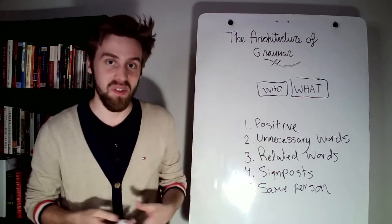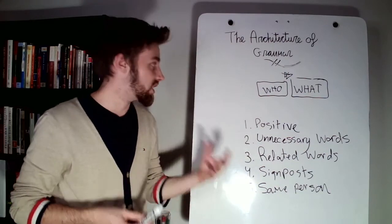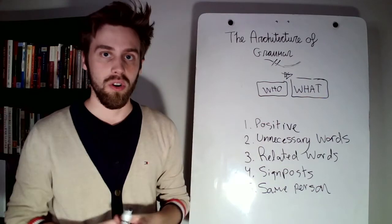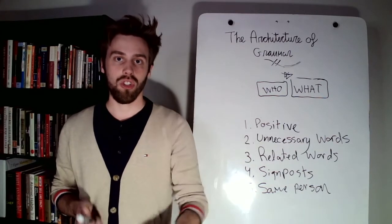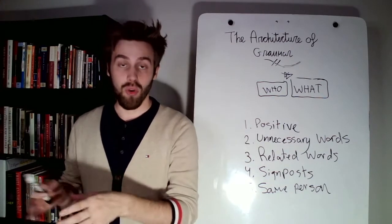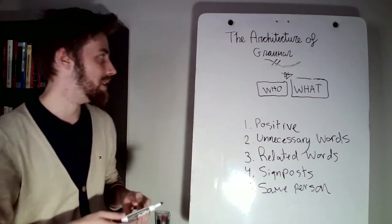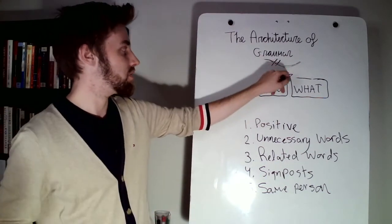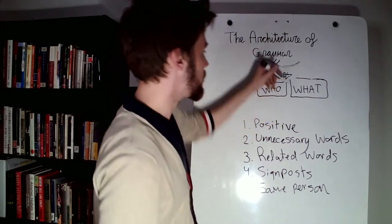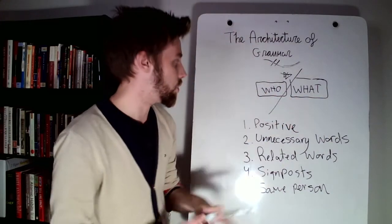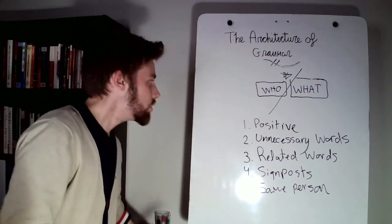Related words. You want to keep the related words together. It can be tempting to put things in the middle. For example, the example that I gave in the architecture of grammar is about Wordsworth and the fifth book of the excursion. In the fifth book of the excursion, Wordsworth gives a minute description of this church. Now that is correct because the related words are together. But what would be incorrect would be to say, Wordsworth and the fifth book of the excursion gives a minute description of this church. So what we've done is we've effectively split the who and the what. And so the related words, they're not together.